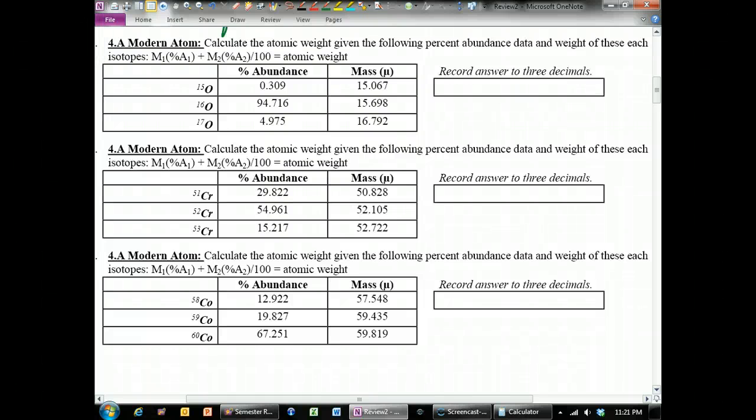Since protons only have an atomic mass of 1 and neutrons only have an atomic mass of 1, all atoms are very close to being a whole number in mass. So 15, 16, and 17 for this oxygen example.